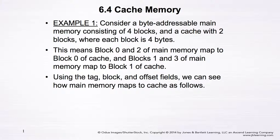Consider a byte-addressable main memory consisting of four blocks and a cache memory with two blocks. In this case n equals two, and the number of blocks x is equal to one, two, three, where each block is four bytes. So in total we have four times four, which is 16 bytes addressable.